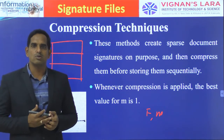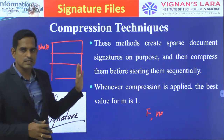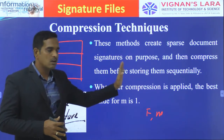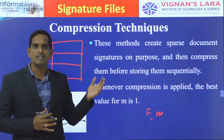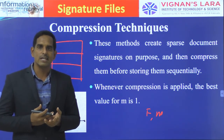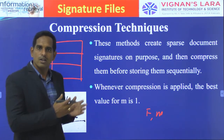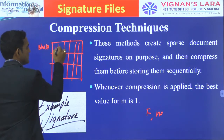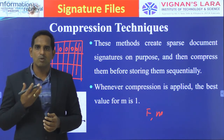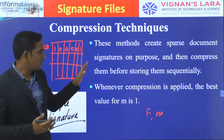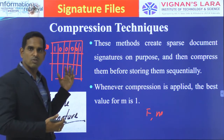Some additional methods have been proposed to improve the performance of the sequential signature file. One of these methods is compression techniques. These methods create sparse document signatures on purpose and compress them before storing them sequentially. In compression techniques, we create the same sequential signature file but make the matrix sparse — having more zeros than ones — deliberately before storing them in sequential fashion.